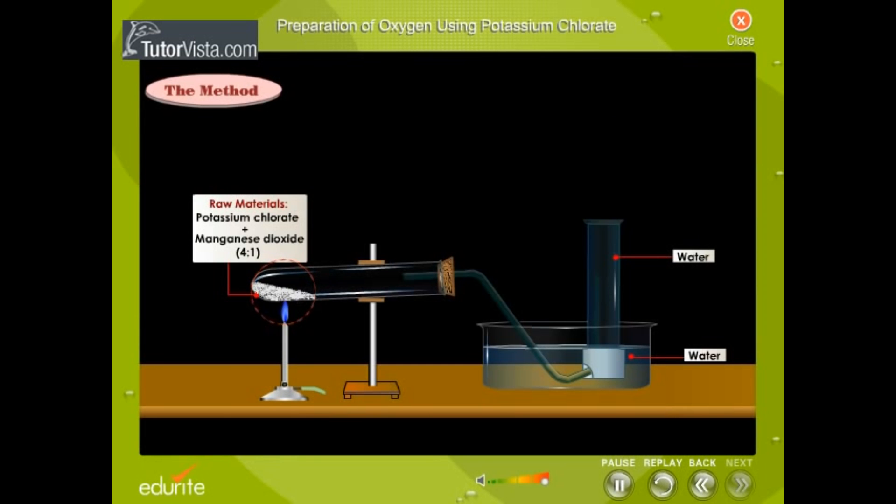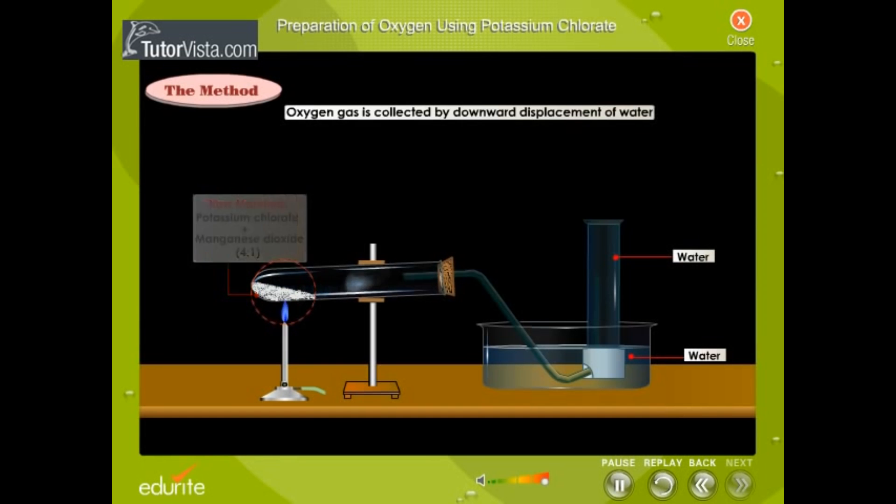Oxygen gas is liberated. Oxygen gas is collected in the gas jar by the downward displacement of water.